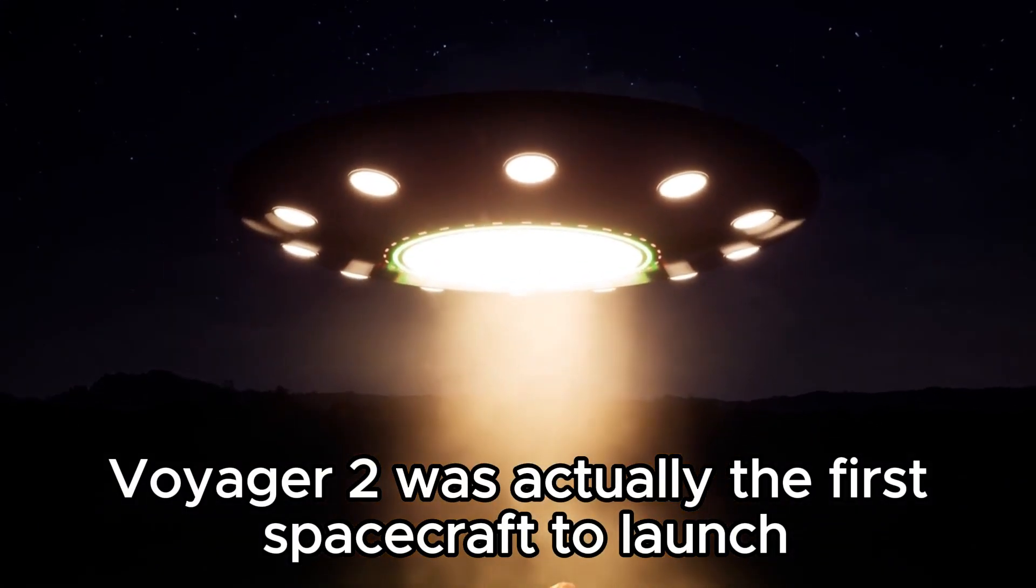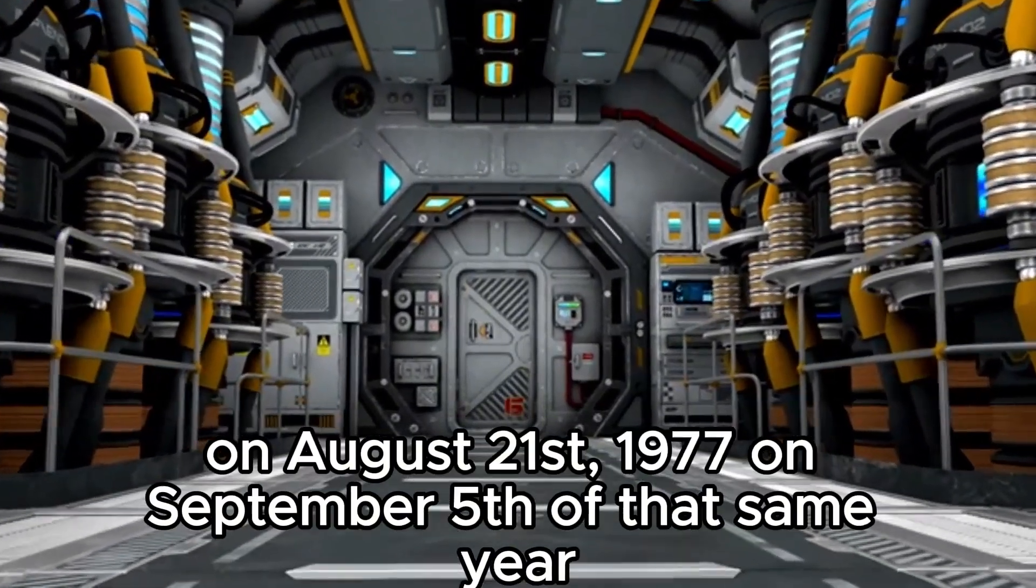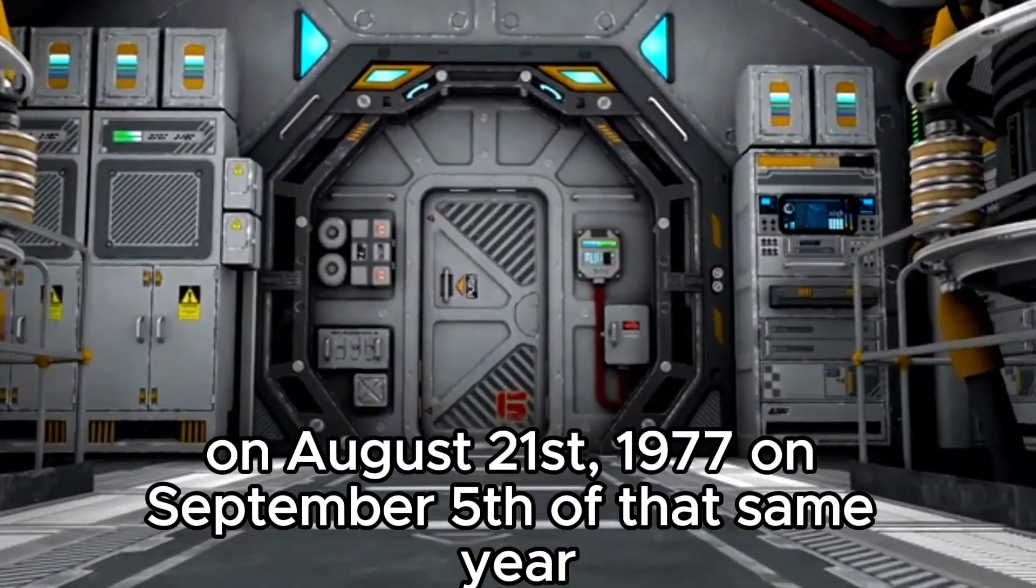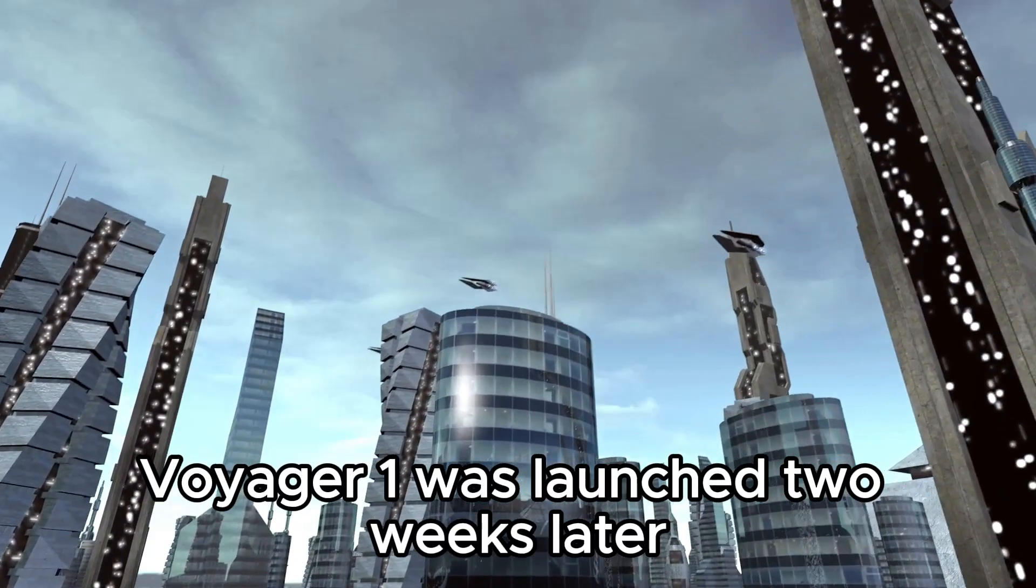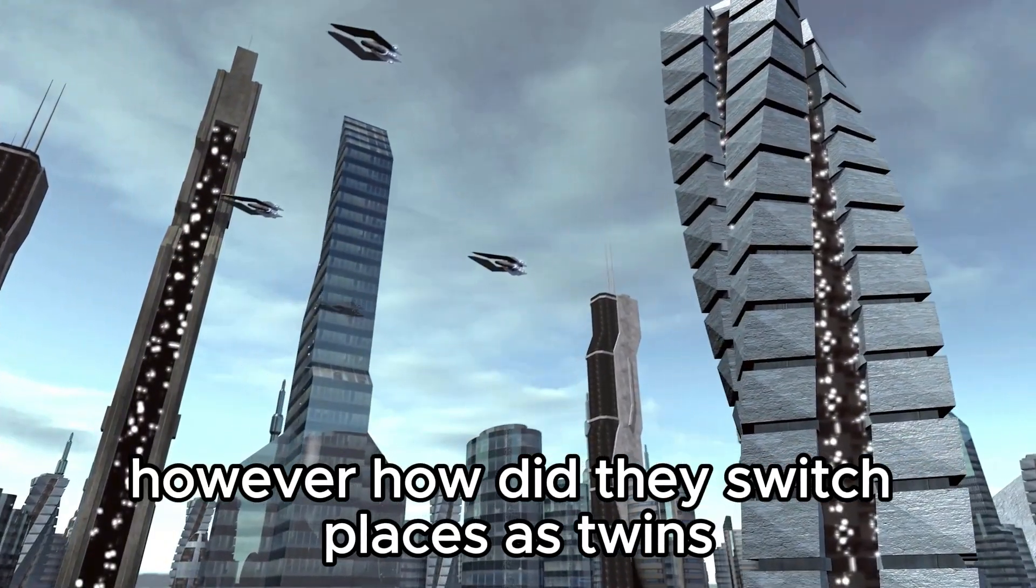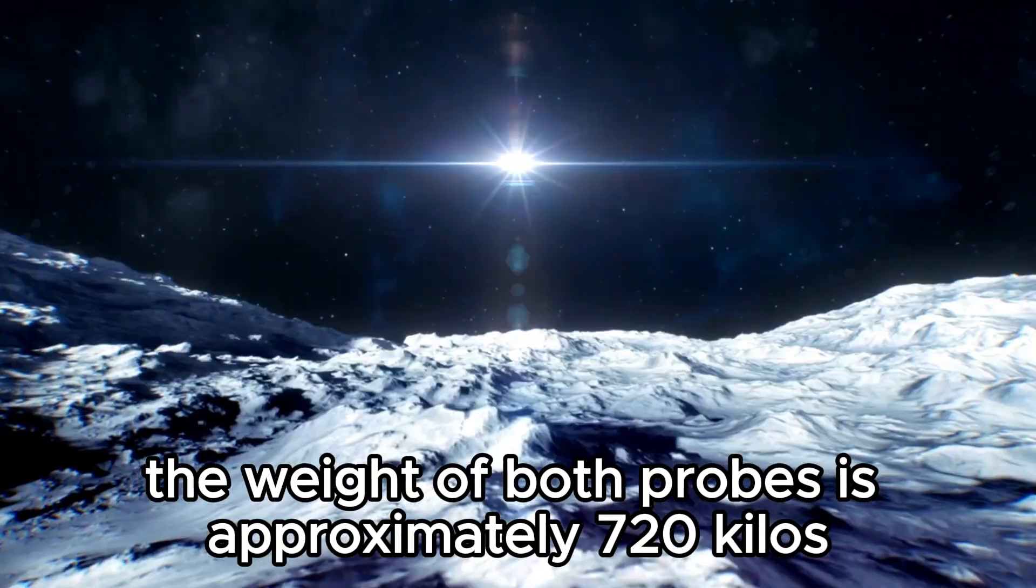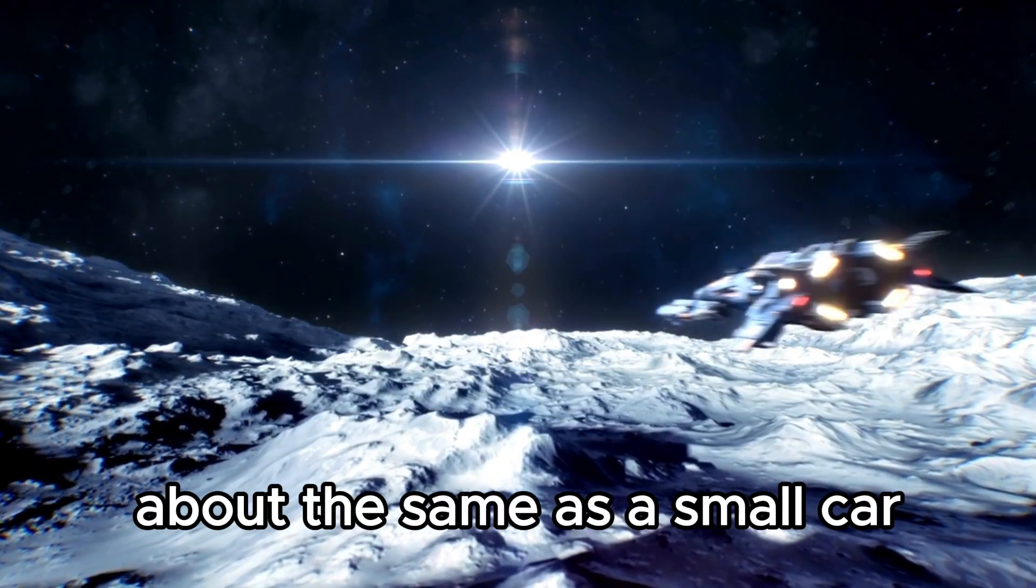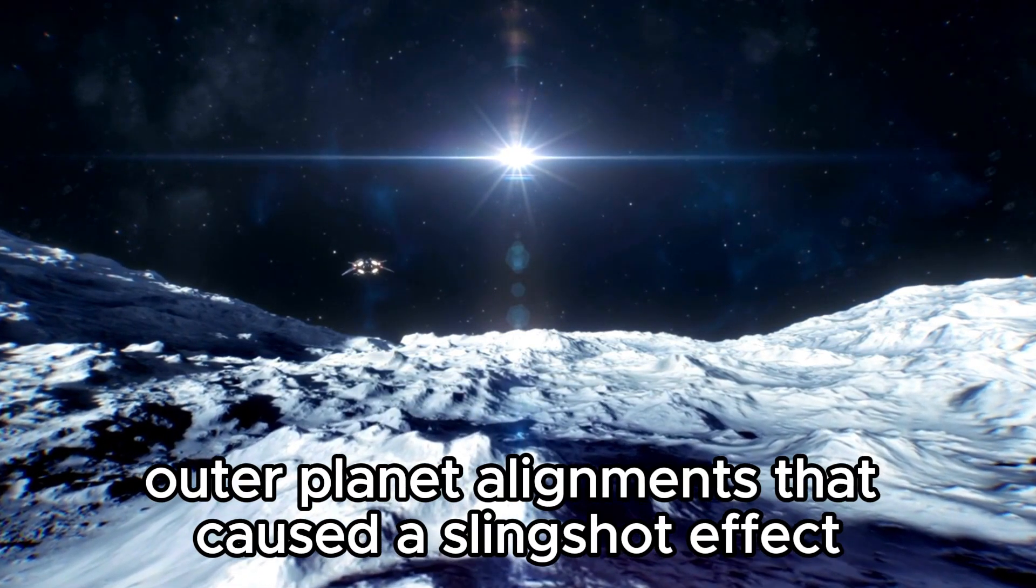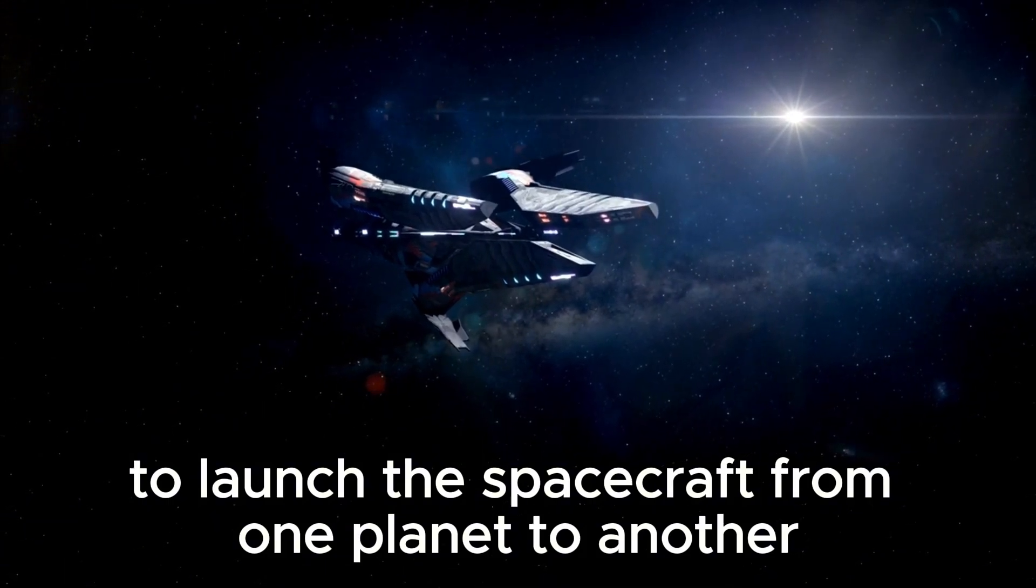Voyager 2 was actually the first spacecraft to launch, departing from the NASA Kennedy Space Center on August 21st, 1977. On September 5th of that same year, Voyager 1 was launched two weeks later. Both probes weigh approximately 720 kilos, about the same as a small car. Both were launched during a window of unique outer planet alignments that caused a slingshot effect to launch the spacecraft from one planet to another.